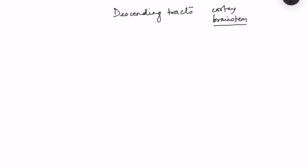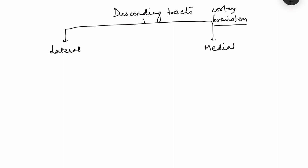What are these descending tracts? Basically we have the lateral systems — tracts which descend laterally in the spinal cord — and then there are the medial group of descending tracts. These lateral and medial descending tracts differ in terms of voluntary versus involuntary control. Lateral descending tracts are for voluntary control of movement and medial descending tracts are for involuntary control of movements.